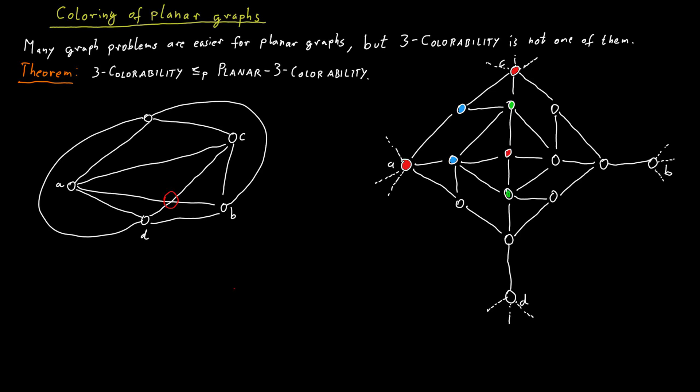Now it follows that this vertex here has to be green. And now it follows also that this vertex to the right of the center has to be blue. This means that this vertex over here has to be green. And that means the right vertex here has to be red. And so on. So this is the only way to really color this gadget.